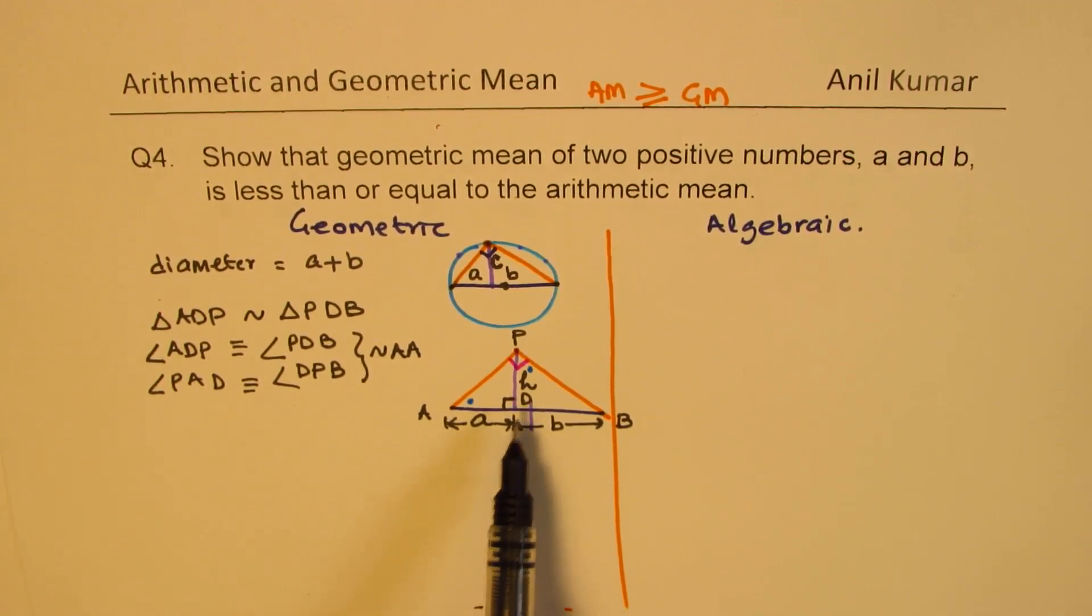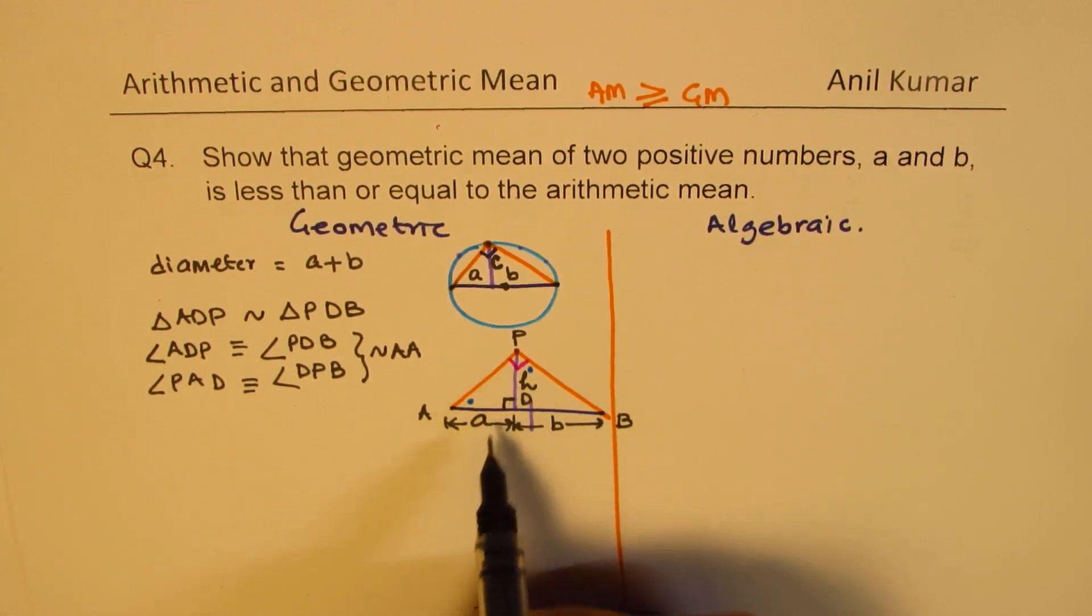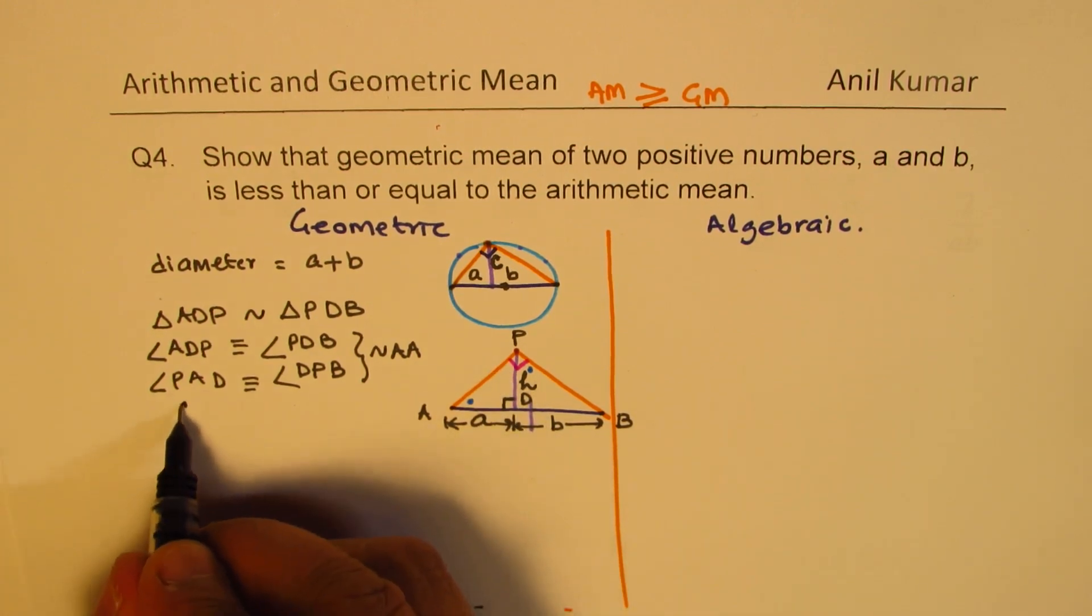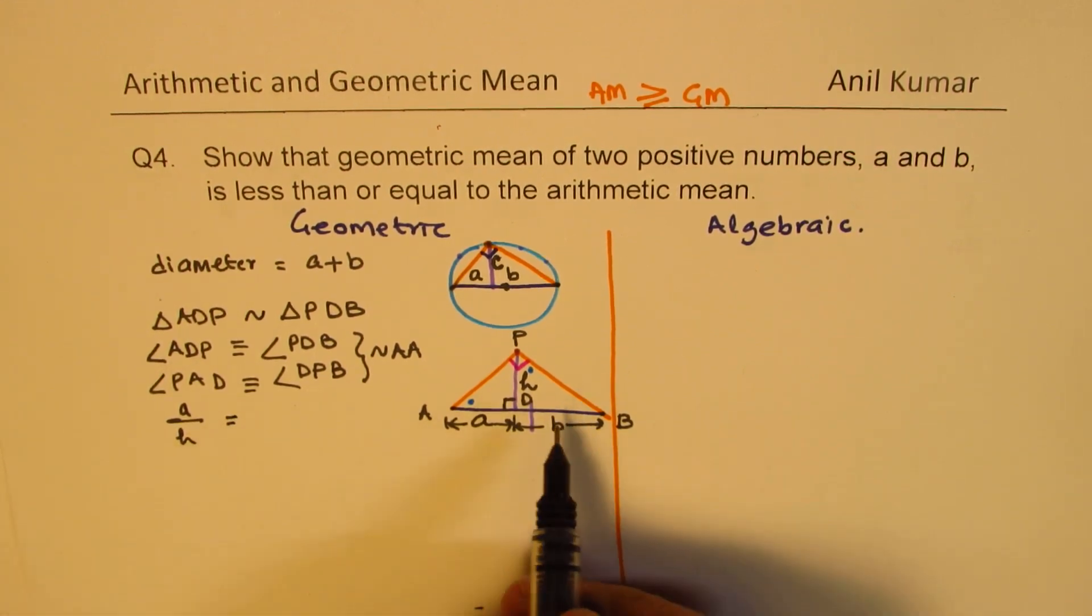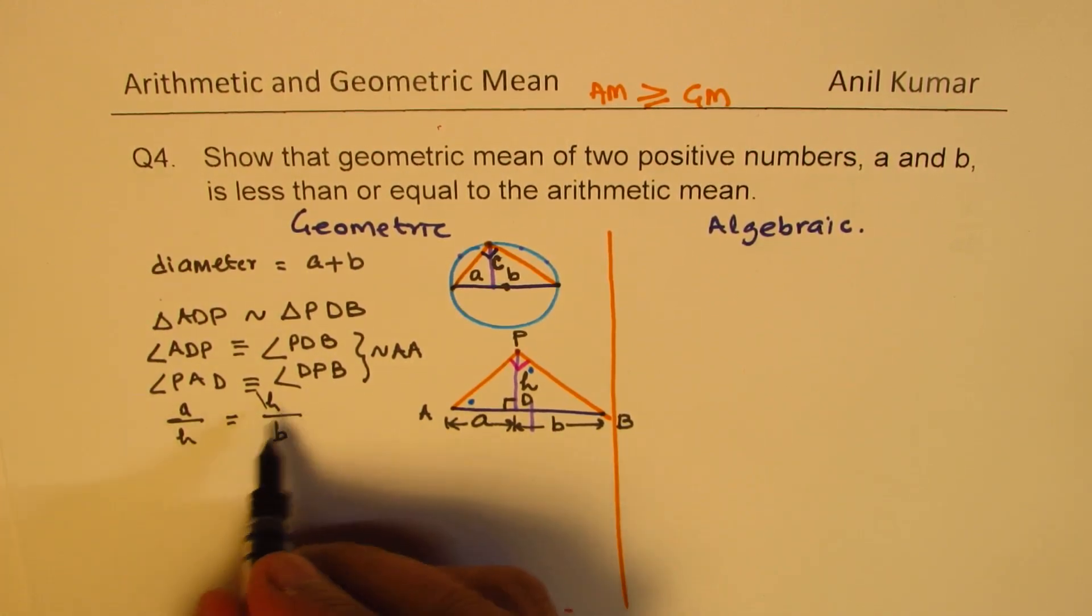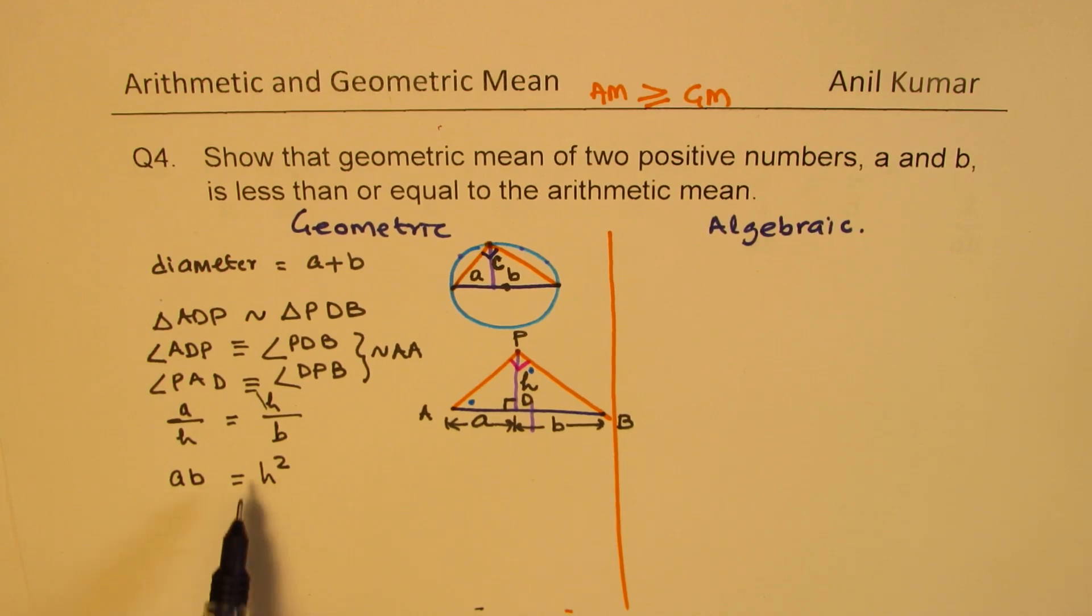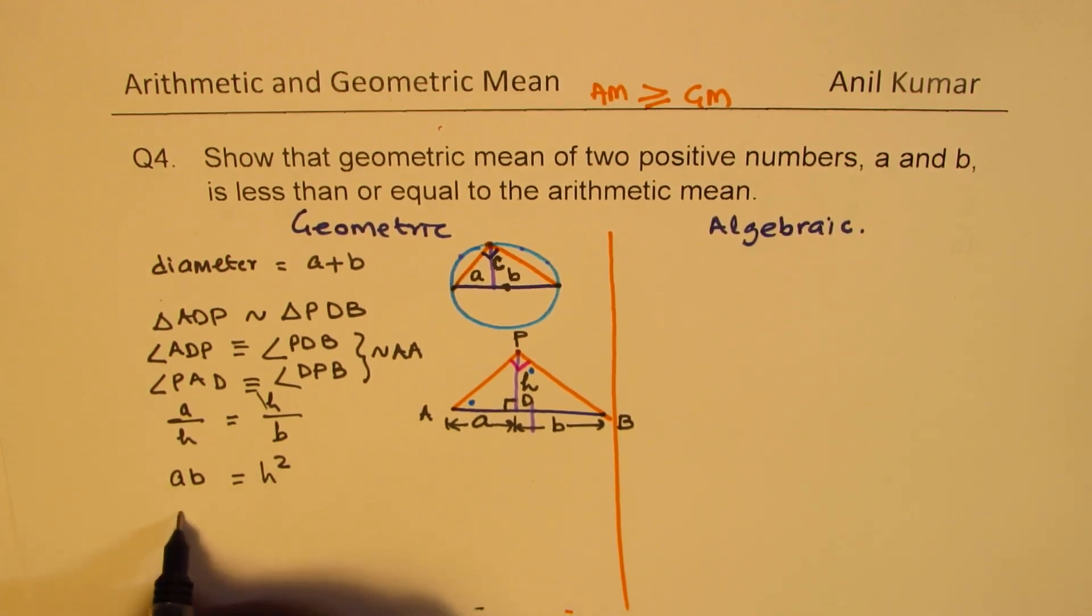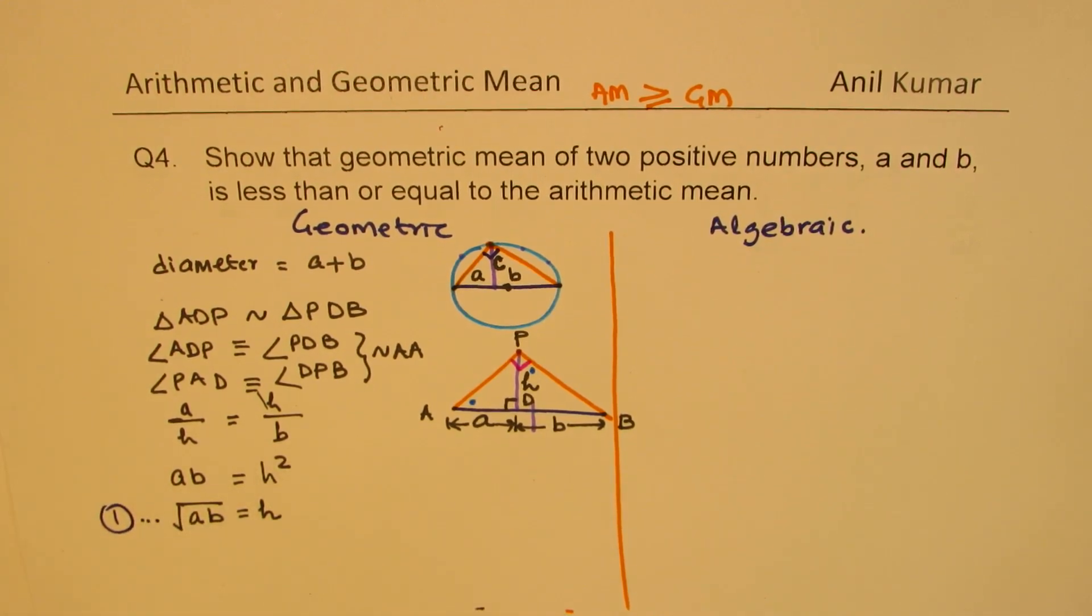Since they are similar, we could write ratios are same. So we can write side opposite to side opposite to that other angle is A divided by side opposite to this is H should be equal to side opposite to this other angle is H in the other triangle divided by B. So cross multiplying gives us AB equals to H square. From here, we can write that square root of AB is equal to H. So we get one condition that square root of AB is equal to H.